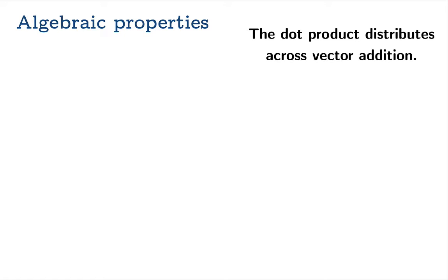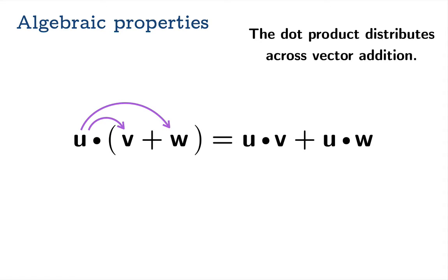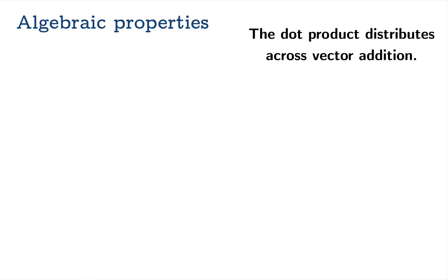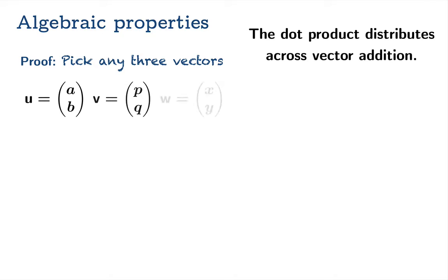Our next property: we claim the dot product distributes across vector addition. If you take u dot the quantity v plus w, then you can actually distribute that dot product to get u dot v plus u dot w. For the proof, we're going to pick three arbitrary vectors, making no special claims about them, and we'll just have these component forms.